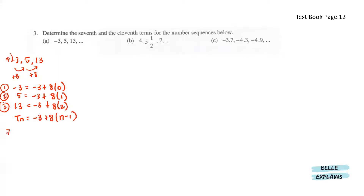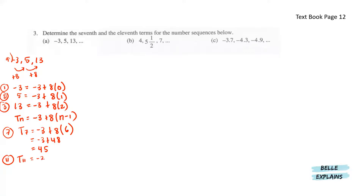So for the 7th term, we have t7 equals to negative 3 plus 8(n minus 1), which gives us 6 because 7 minus 1. So here we have negative 3 plus 48, and that will give us 45. And for the 11th term, we have t11. So negative 3 plus 8 times (11 minus 1), which means 11 minus 1 will give us 10. Negative 3 plus 80 will give us 77.